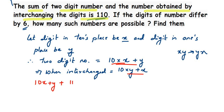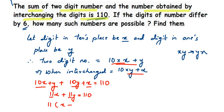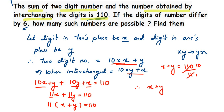So it will be 10x + y + 10y + x = 110. Now adding like terms: 10x and x gives 11x, and y and 10y gives 11y, so 11x + 11y = 110. We can see that 11 is common, so taking 11 outside: 11(x + y) = 110. Transposing 11 to the other side and dividing, x + y = 110 ÷ 11 = 10. So our first equation is x + y = 10.